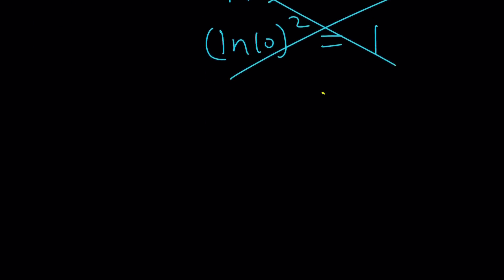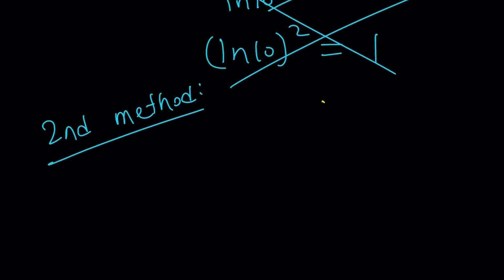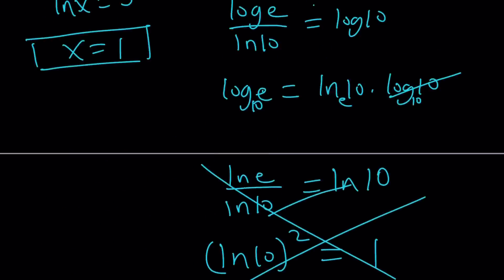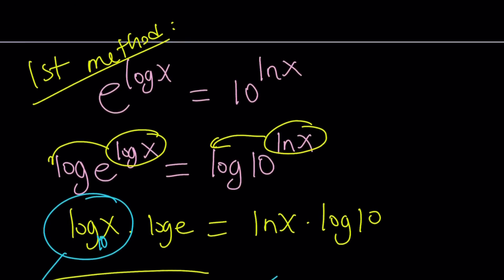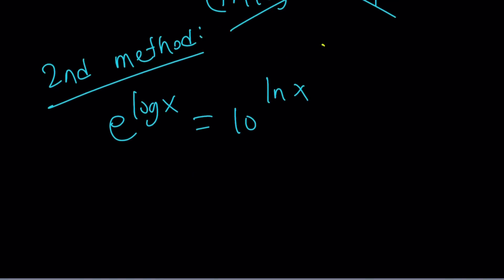Now, second method. Let's go ahead and talk about an alternative approach. And then we'll finish up with that. And I'll show you a graph at the end like I said earlier. So, we have... What was the problem? 10 to the power or e to the power? Yes, it started with e. e to the log x equals 10 to the power ln x. Instead of logging both sides, let's go ahead and do the following. Let's use substitution.